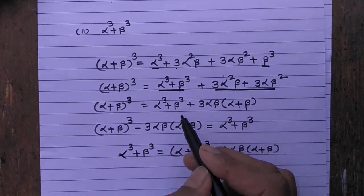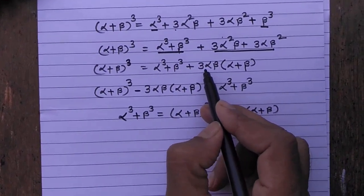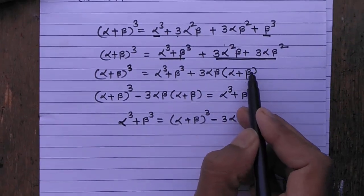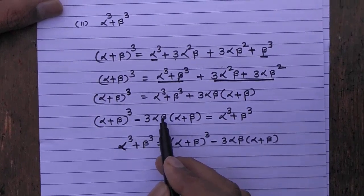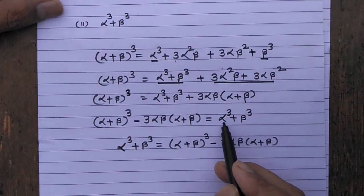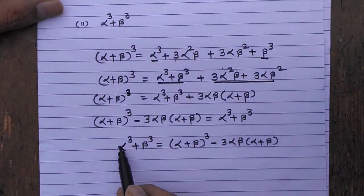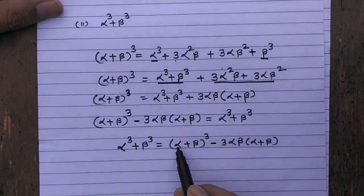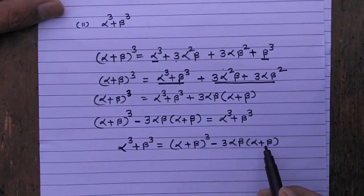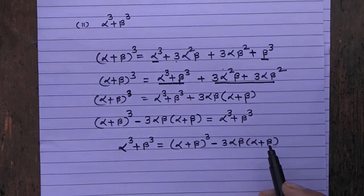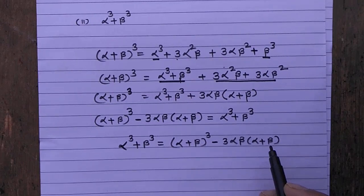After taking 3 alpha beta as common, one alpha and one beta remain inside the bracket, giving alpha plus beta. Transposing that term to the left side: alpha plus beta whole cube minus 3 alpha beta into alpha plus beta is equal to alpha cube plus beta cube. So, alpha cube plus beta cube equals alpha plus beta whole cube minus 3 alpha beta times alpha plus beta. If square is there use the square identity; if cube, use the cubic identity.